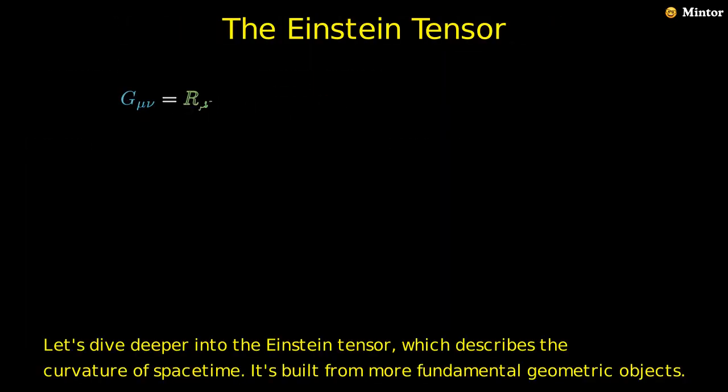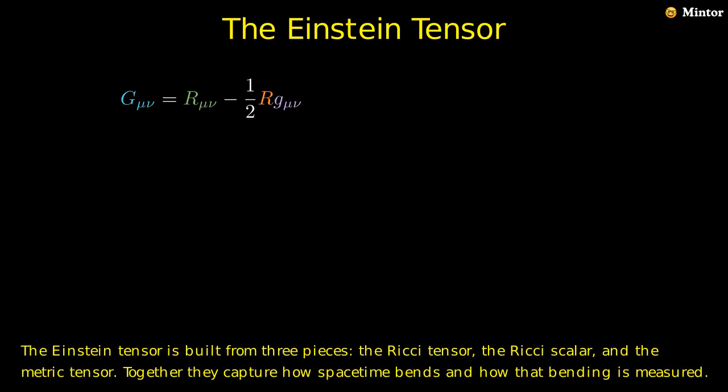Let's dive deeper into the Einstein tensor, which describes the curvature of spacetime. It's built from more fundamental geometric objects. The Einstein tensor is built from three pieces: the Ricci tensor, the Ricci scalar, and the metric tensor.